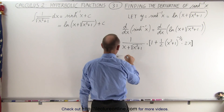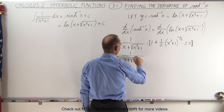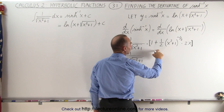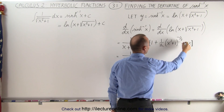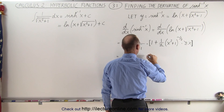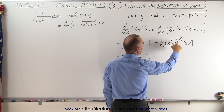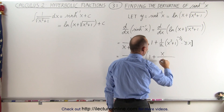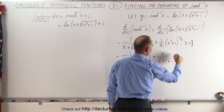Now all we have to do is simplify. This becomes equal to 1 over x plus the square root of x squared plus 1. Notice that the 2 here and the 2 there cancel out, so we end up with a 1. That gives us times 1 plus x in the numerator and the square root of x squared plus 1 in the denominator.